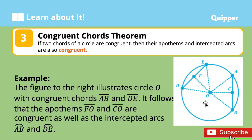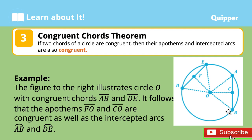Third is the congruent chords theorem. If two chords of a circle are congruent, then their apothems and intercepted arcs are also congruent. For example, the figure illustrates circle O with the congruent chords line segment AB and line segment DE. It follows that the apothems FO and CO are congruent, as well as the intercepted arcs AB and DE. So that's the congruent chords theorem — if you have two chords that are congruent, it follows that the apothems and intercepted arcs are also congruent. When you say congruent, they are equal.